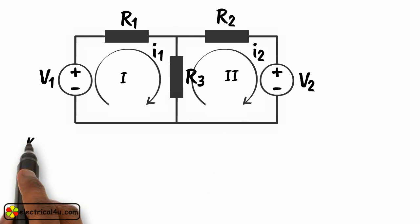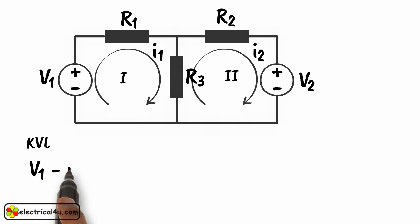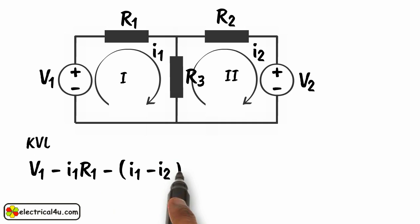Applying KVL across mesh 1, we get V1 minus I1 into R1 minus (I1 minus I2) into R3 equals 0. Let's say this is equation 1.